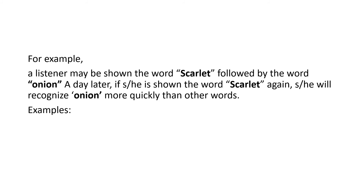For example, if a person is shown the word 'scarlet' followed by the word 'onion' — since the color of an onion is scarlet — then a day later, when shown the word 'scarlet' again, they will be able to recognize it more quickly than other words.